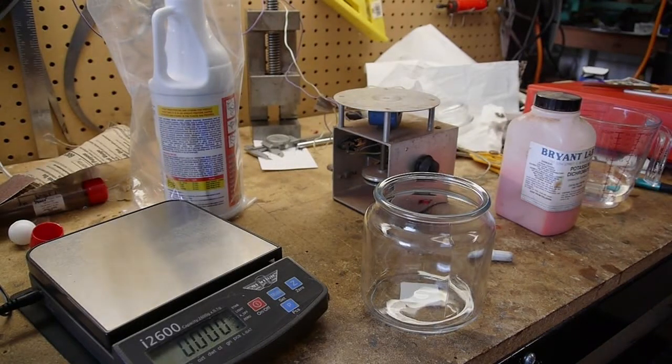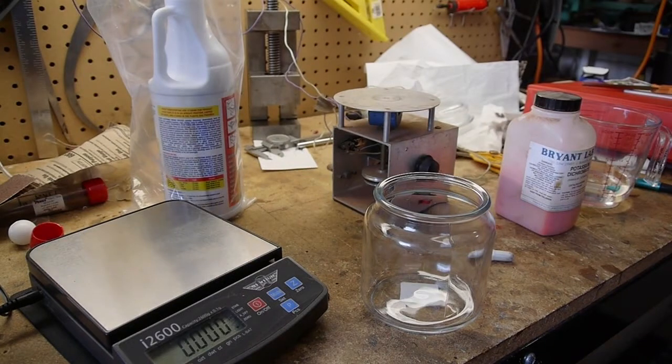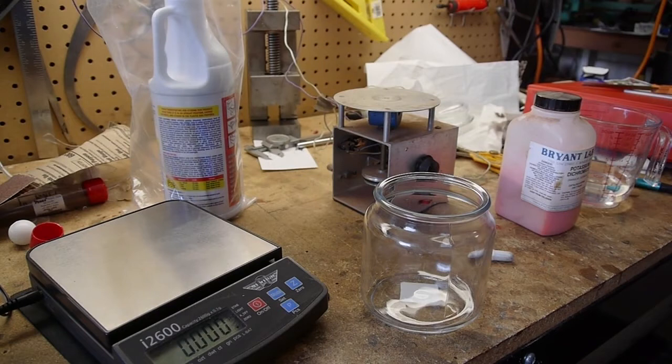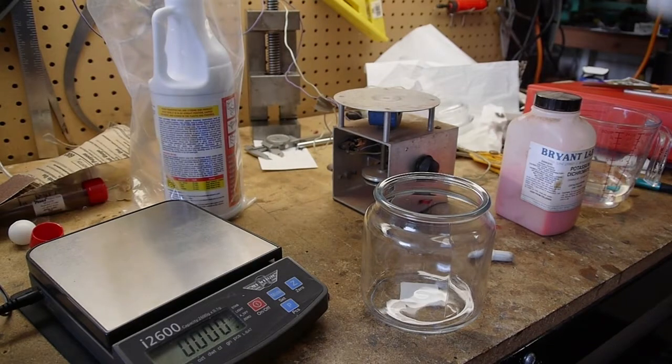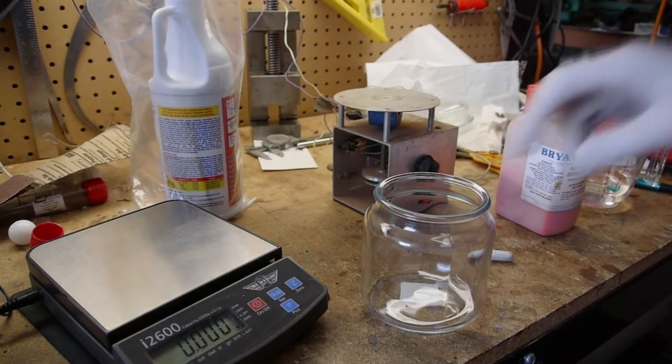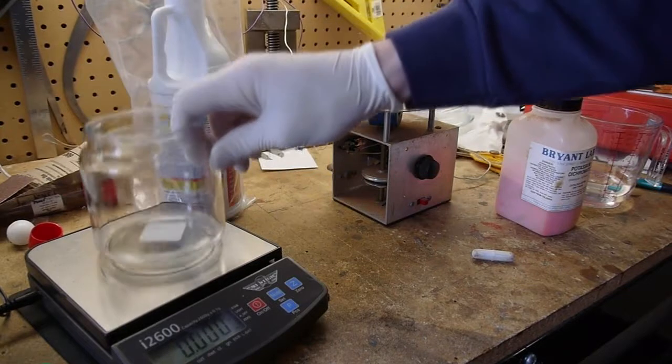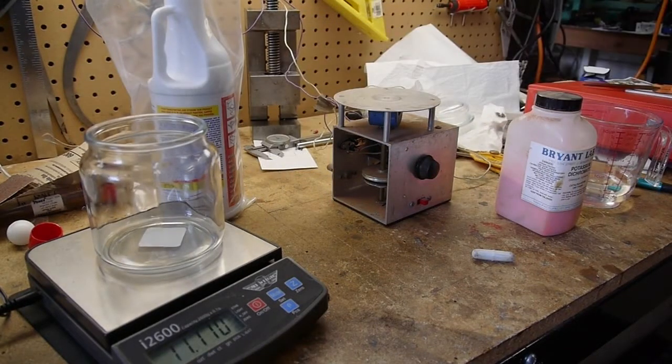Okay, so today I'm going to be making a solution that will etch Delrin plastic, acetal plastic, so that it can be glued or maybe painted or coated with something. The Delrin by itself is so slippery that coatings won't really stick to it. So I'm going to start off here, and I found this formula for an etchant which is sulfuric acid based on the net, and I'll post a link.